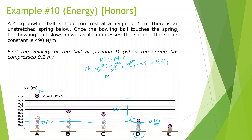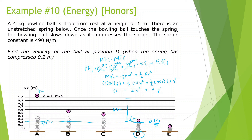So: mgh equals one half mv² plus one half kx². Mass 4, gravity 10, height 0.8 equals one half times 4 times v squared plus one half times 490 times 0.2 squared. Simplifying: 32 equals 2v² plus 9.8. So 32 minus 9.8 divided by 2, then square root of that, gives velocity equals 3.33 meters per second.